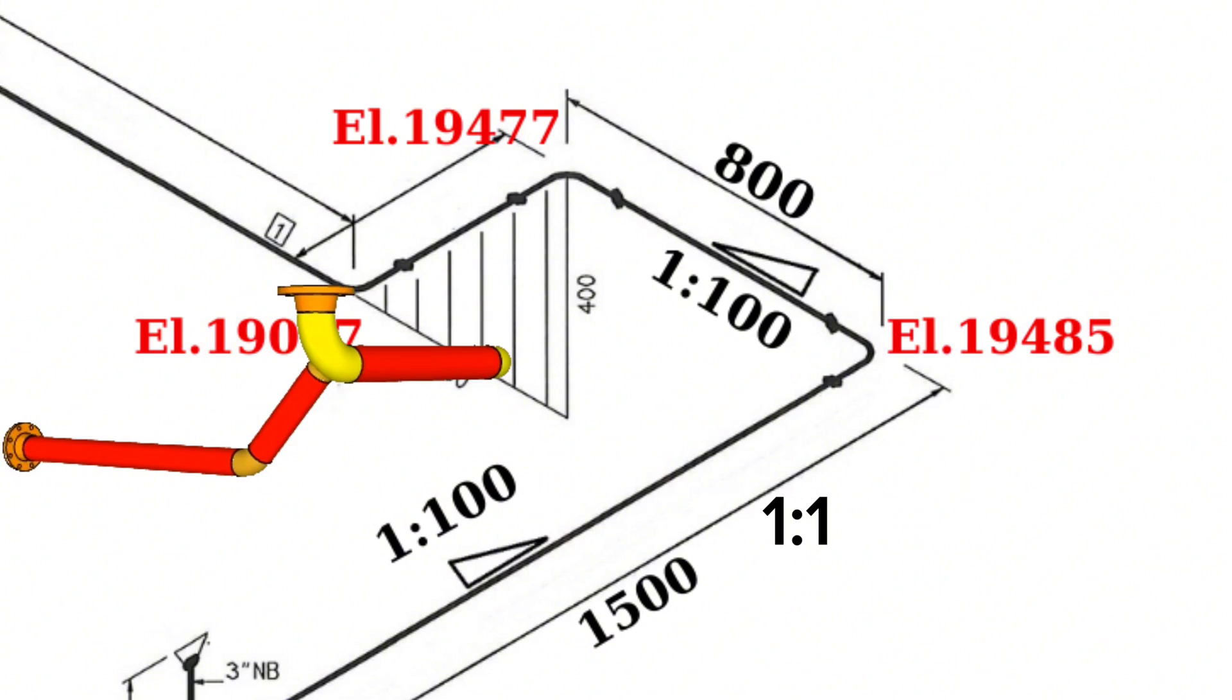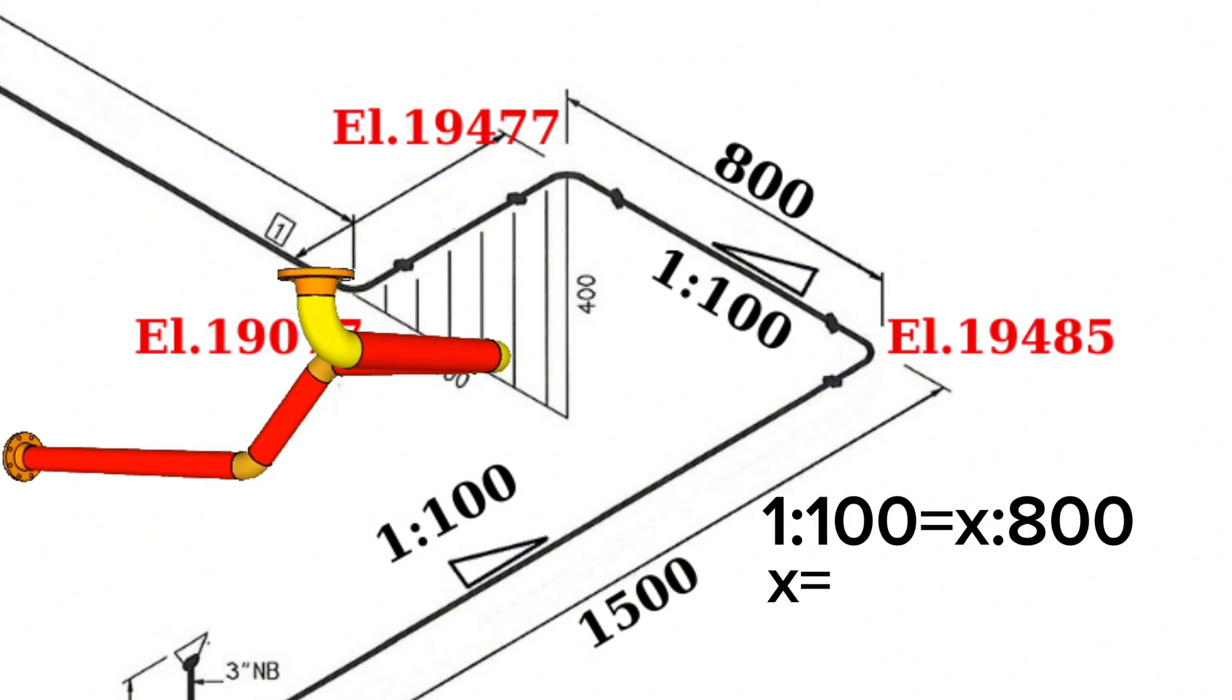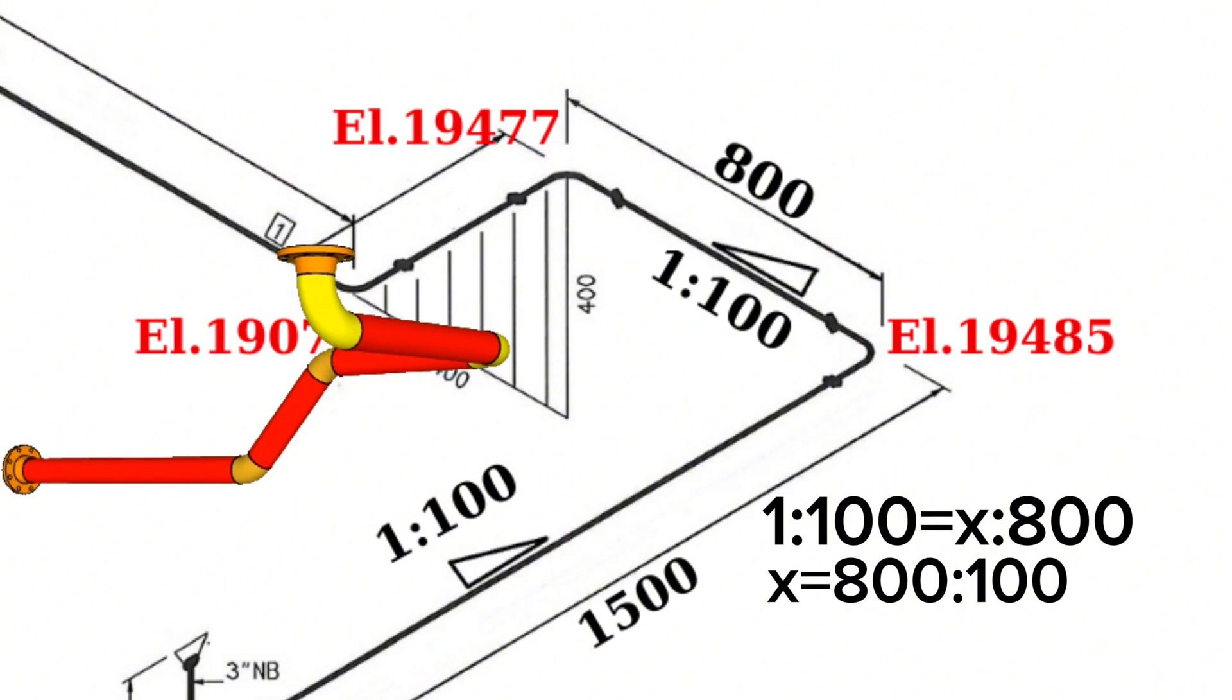1 to 100 ratio equals x to 800 ratio. Here x equals 800 to 100 ratio. Continue the calculation and found x equals 8 millimeters.